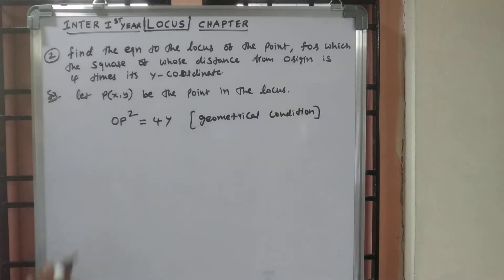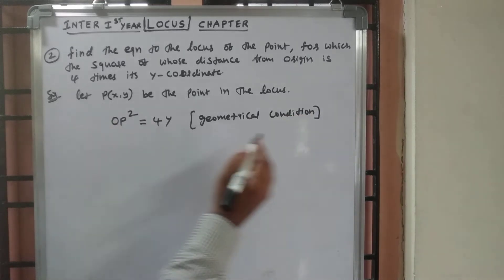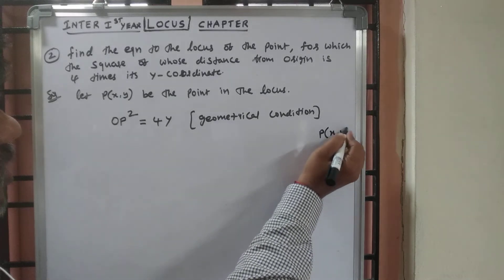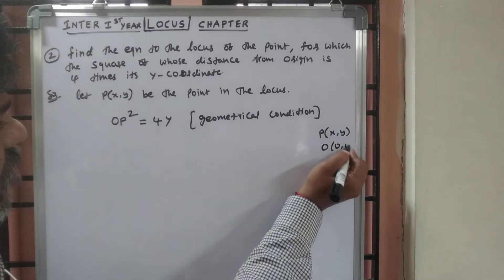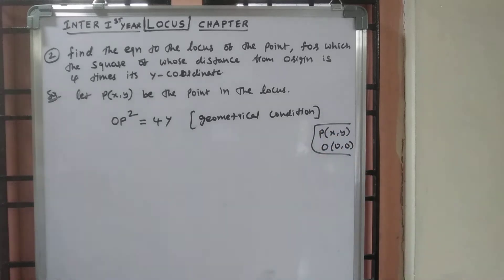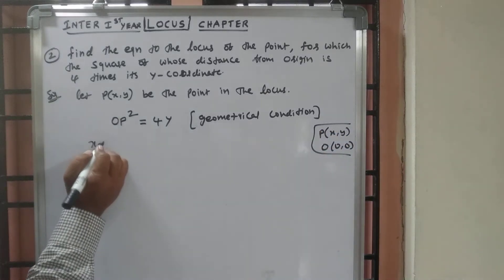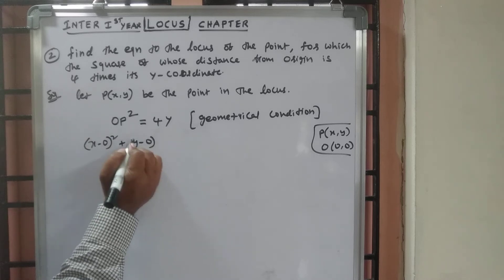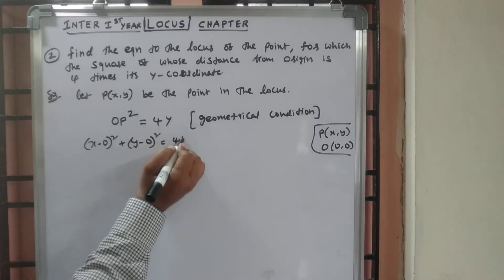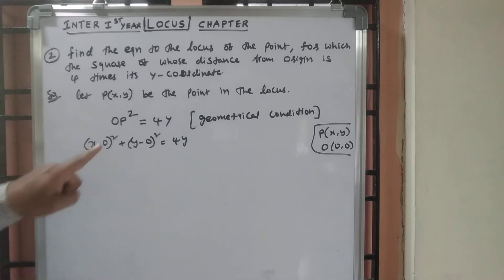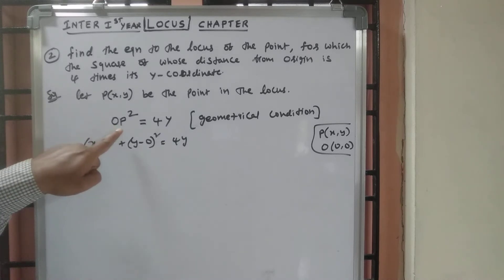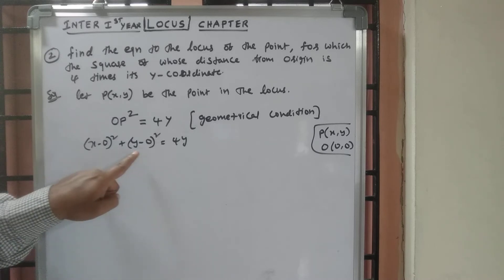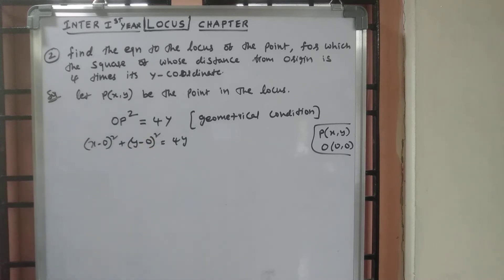OP² is the distance between P(x, y) and O(0, 0). Using the distance formula: OP² = (x minus 0) whole square plus (y minus 0) whole square, which equals 4y. Here x1, y1 is the origin (0, 0) and x2, y2 is the point P(x, y).